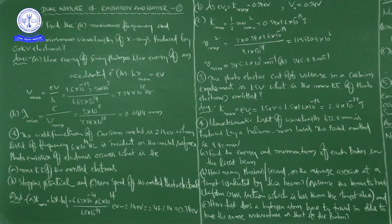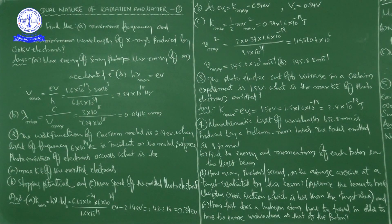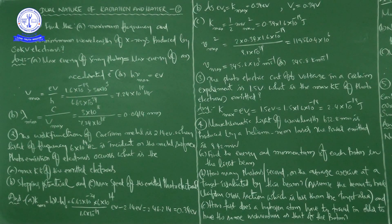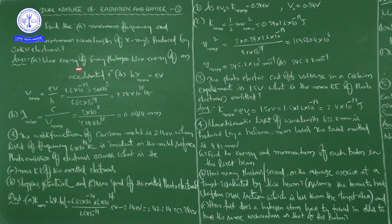In continuation to the last class, from this chapter — Dual Nature of Radiation and Matter — we are going to start exercise problems now. In our last class, we completed example problems. So now we are going to start exercise problems. The chapter is Dual Nature of Radiation and Matter.